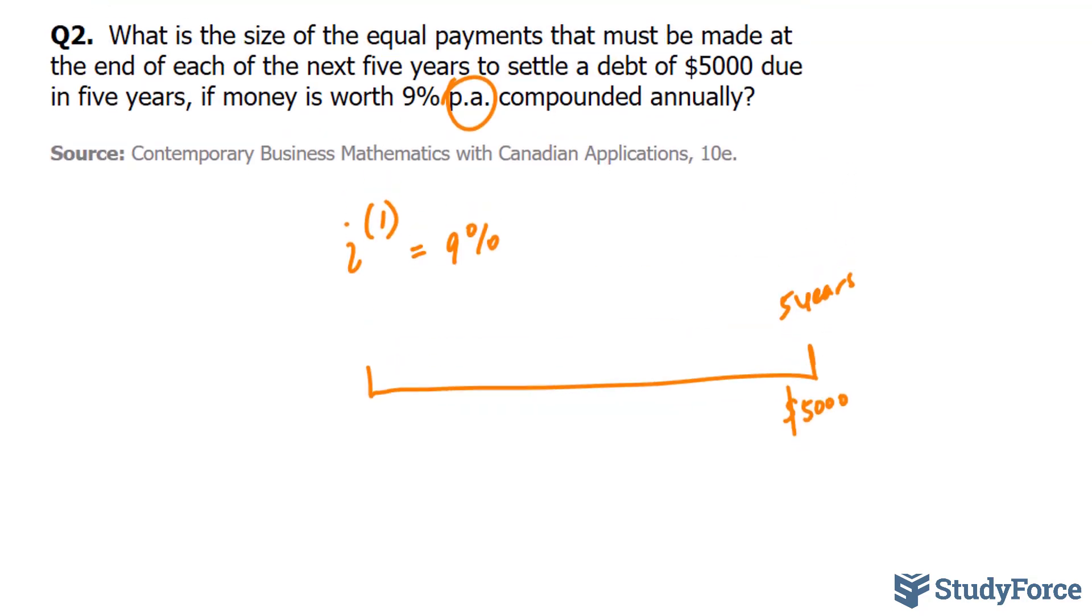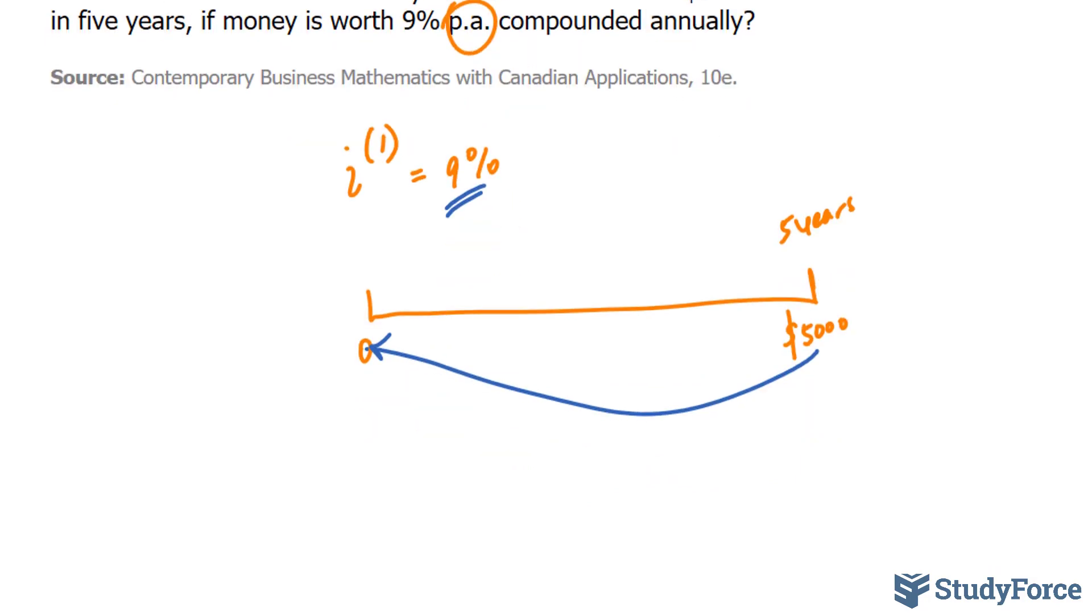We don't know the present value. There are many ways that you can solve this question. I'll show you one way that I find easiest. That is, I will find out what the present value of a future value of 5,000 is given this percentage. So I'll start by finding the present value, and then I'll use the same technique as before to find out my equivalent payments for the next 5 years.